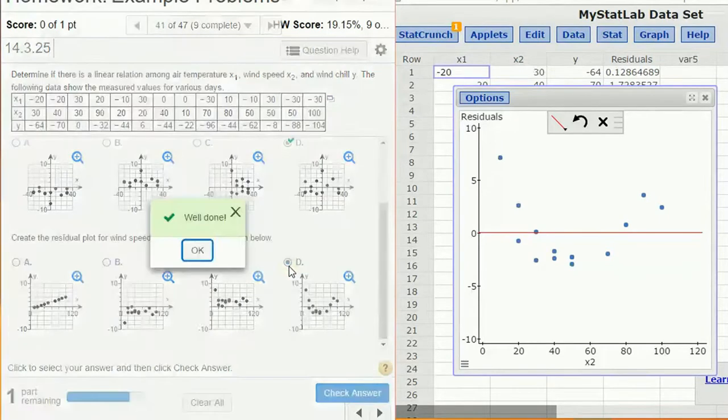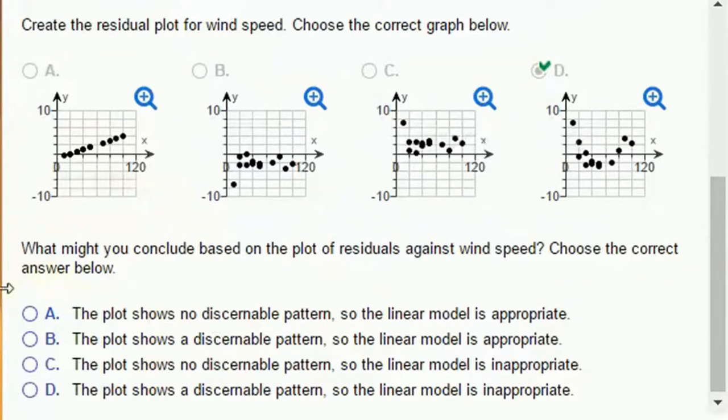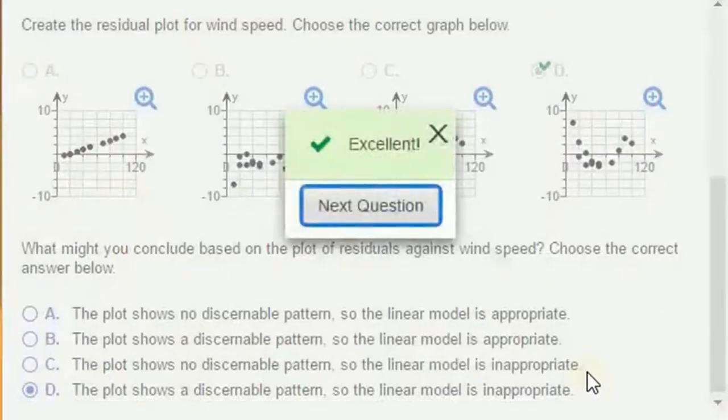That is actually a bit of a red flag. When we have that shape that indicates that there is a, this is what we would call a discernible pattern. The residuals against the air temperature looked fine, but for wind speed, it looked like there was, this curve indicates that there isn't a linear relationship with wind speed. It's perhaps a relationship with wind speed with like the square of wind speed or something like that. So I would say that there is a discernible pattern. So a linear model is not appropriate, inappropriate. That's the conclusion you need to make.